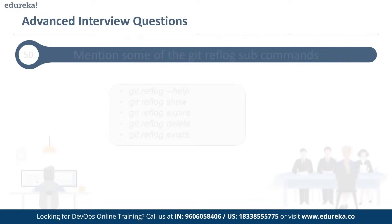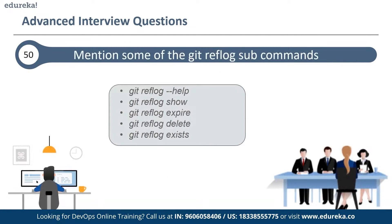The last question is: mention some of the git reflog subcommands. The first is git reflog help, which opens the manual page. The second is git reflog show, which shows the logs of the references provided in the command line. The third is git reflog expire, which prunes older reflog entries. The fourth is git reflog delete, which deletes single entries from the reflog history. The fifth is git reflog exists, which checks whether a reference — a branch or tag — has reflog history entries.